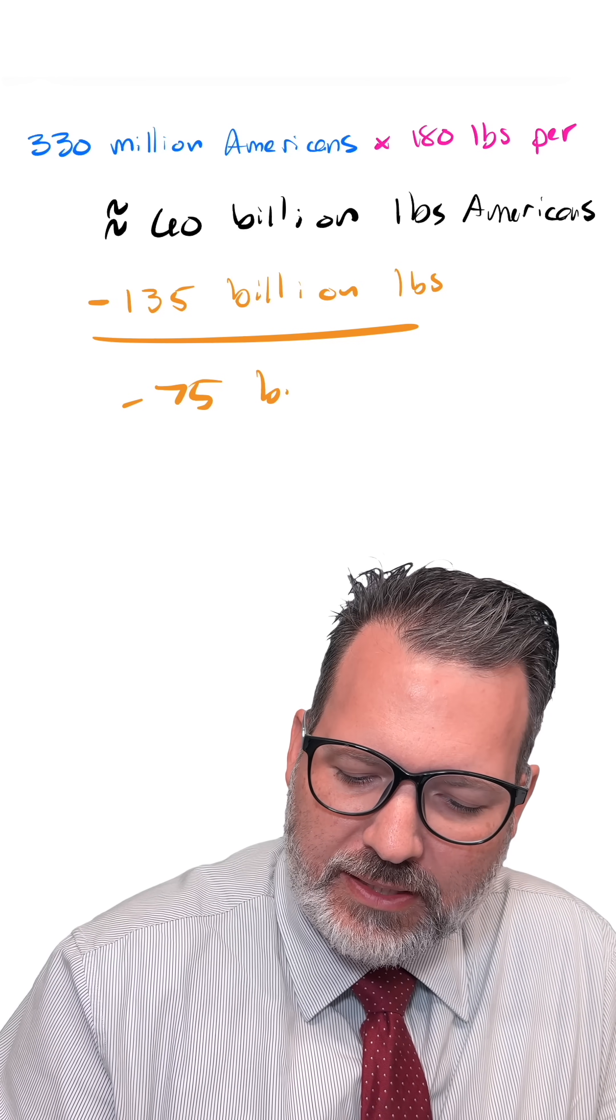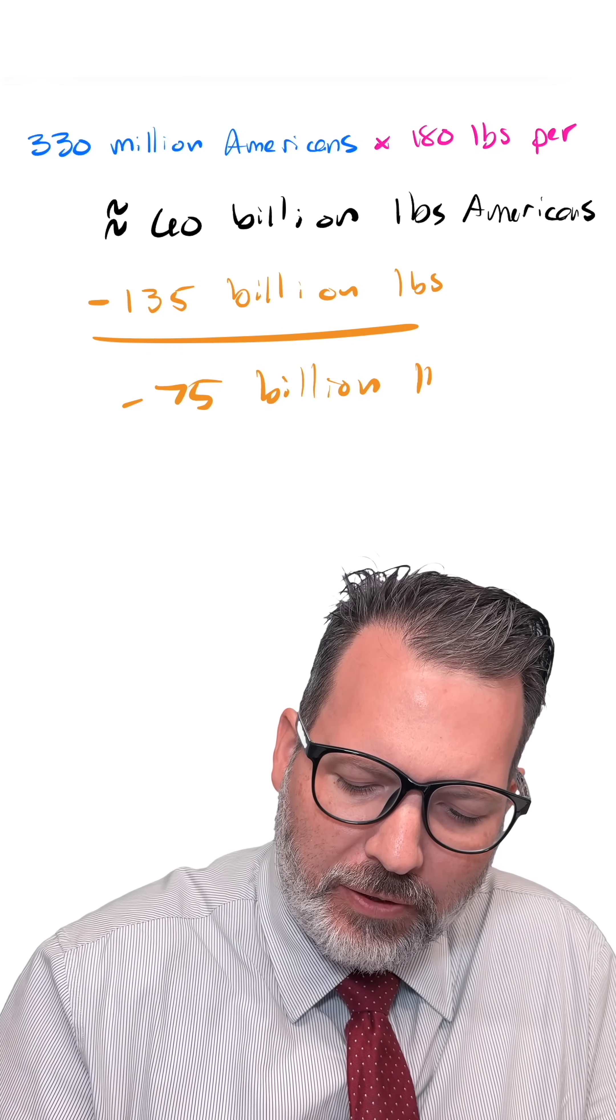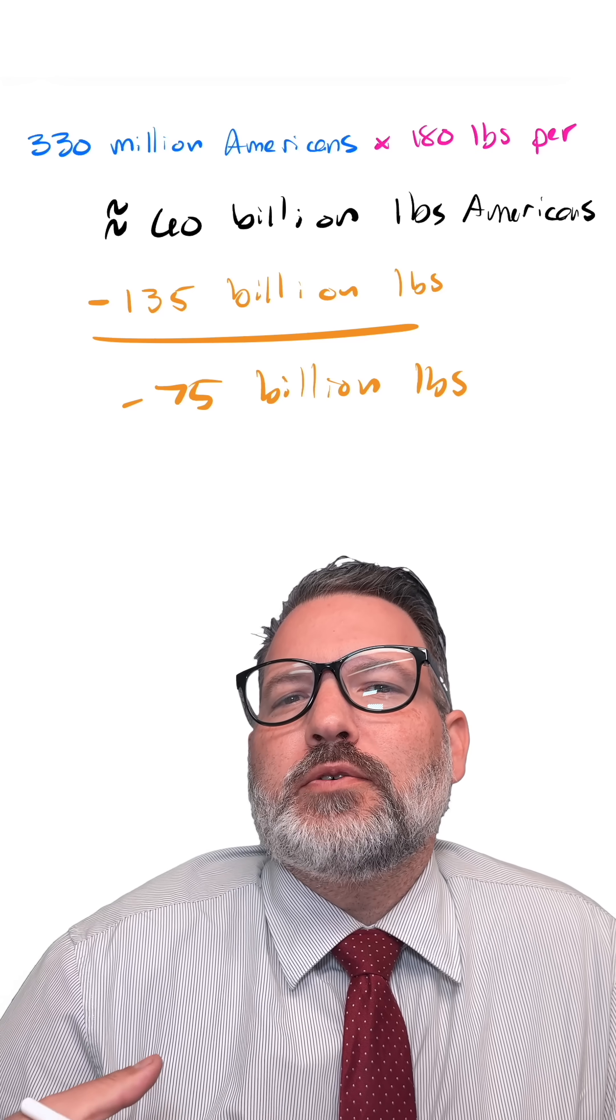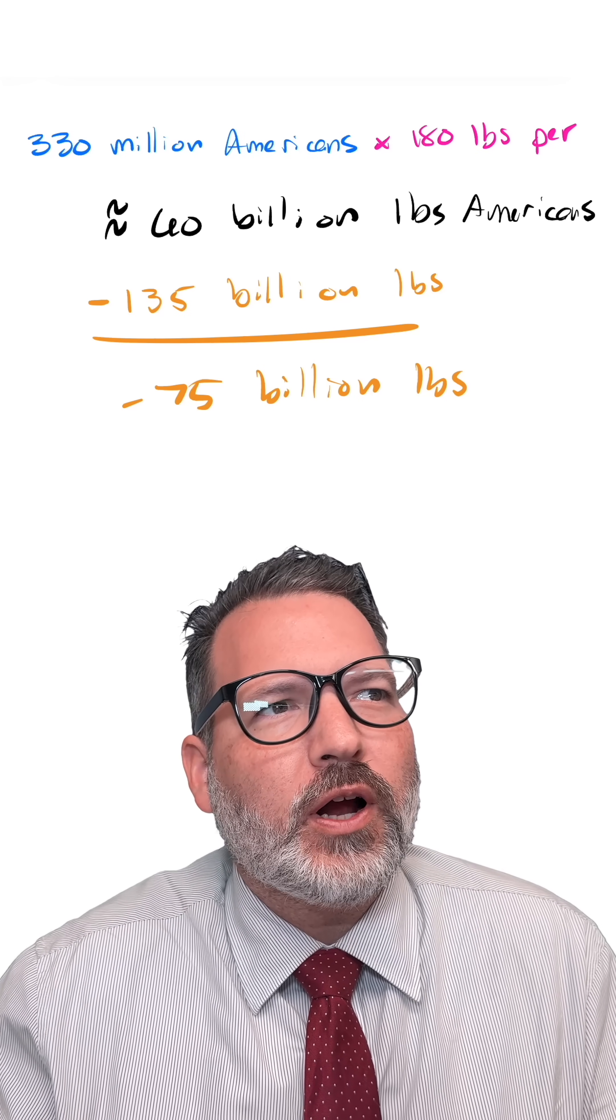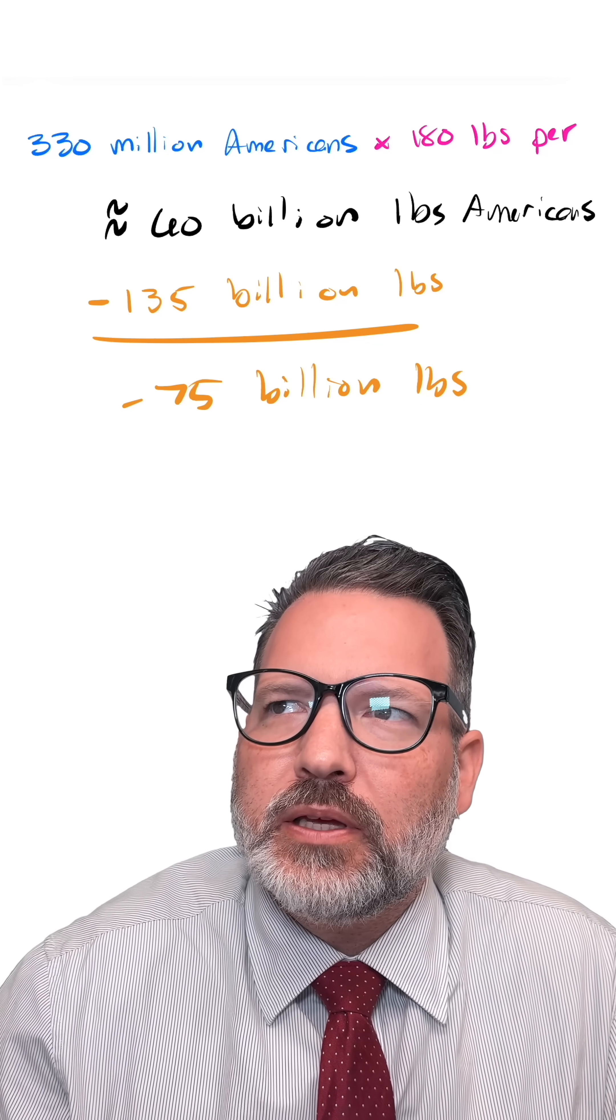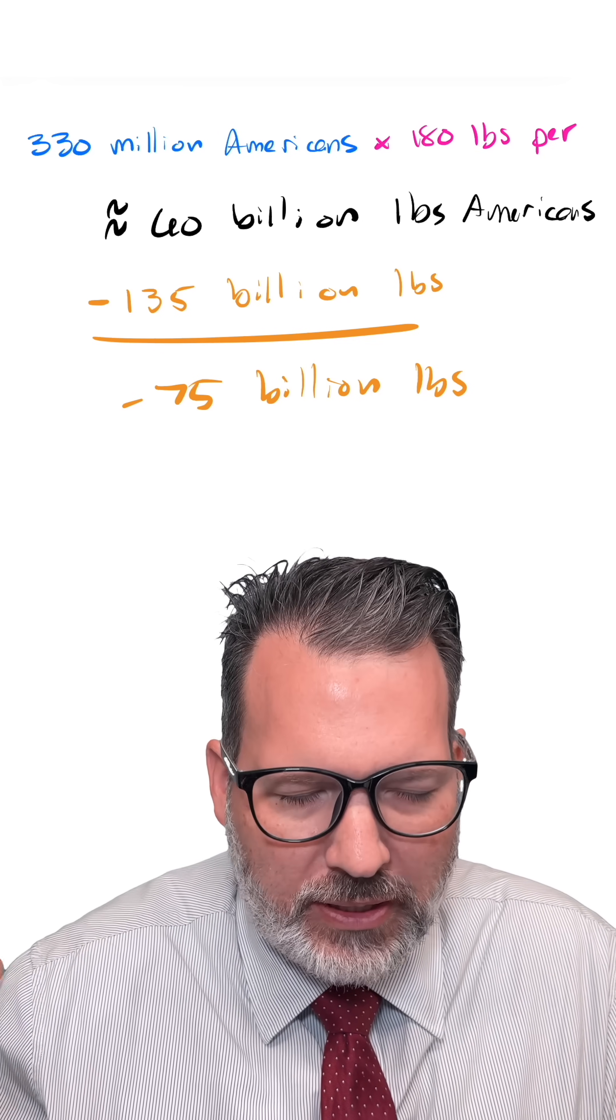the math ain't mathing, as they say. Somehow we are ending up with negative 75 billion pounds of Americans. I've seen it suggested that this is one of those unit errors where you say like, oh my goodness, Elon Musk has 400 billion dollars, though he could give every American a billion dollars and still have 70 billion dollars left over, which is not true.